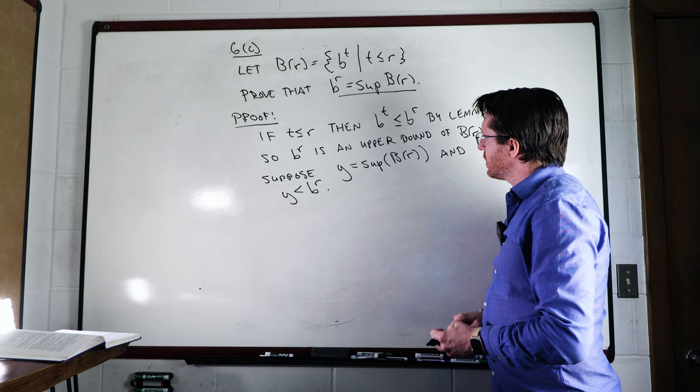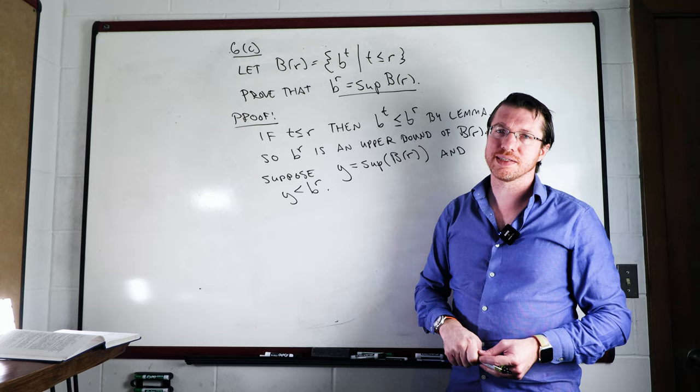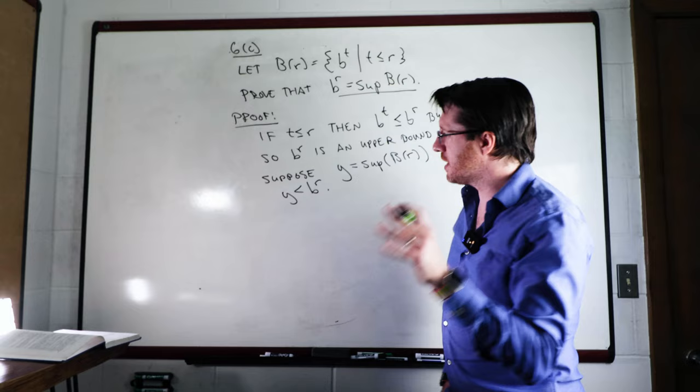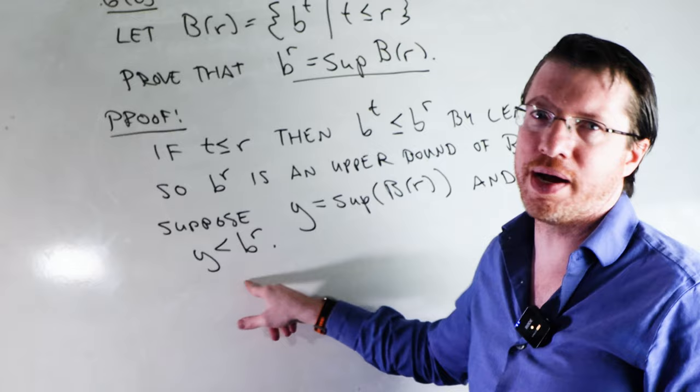And now let's suppose that Y is equal to the supremum of BR. And Y is strictly less than BR. Let's see if we can show that this is going to be a contradiction. So what we're trying to do is leverage the idea of continuity. There should be a T really close to R that we should be able to squeeze between Y and BR here. We don't have continuity yet. So we have to kind of work with what we got.